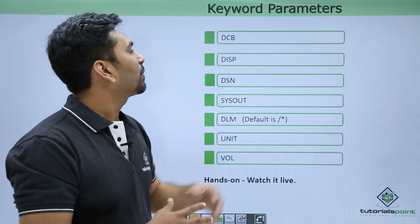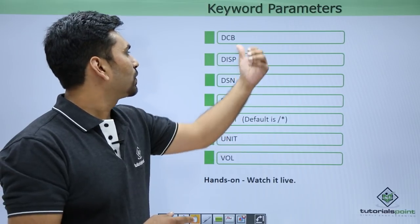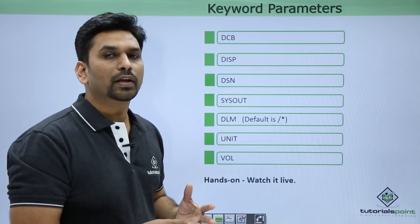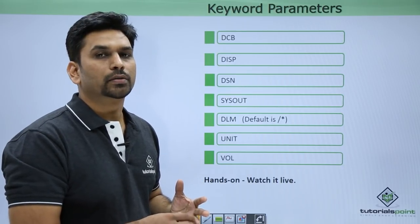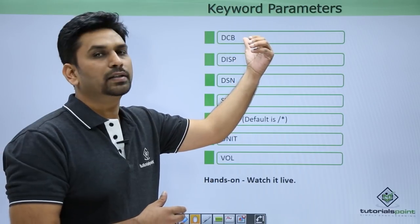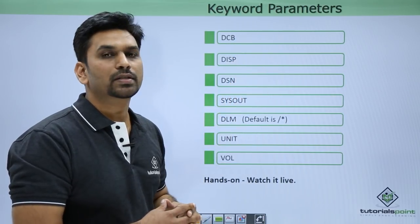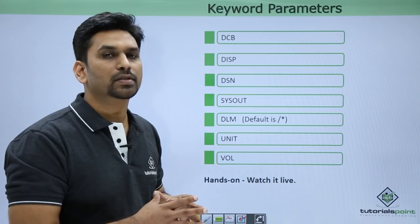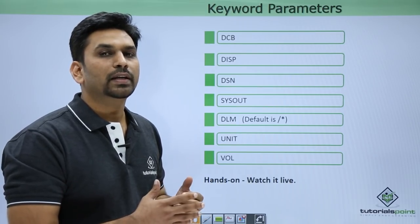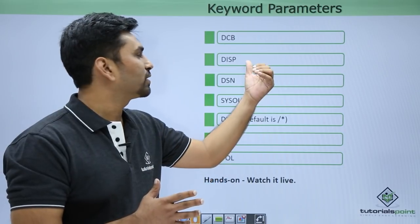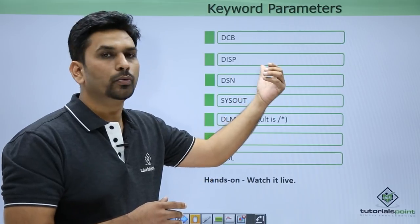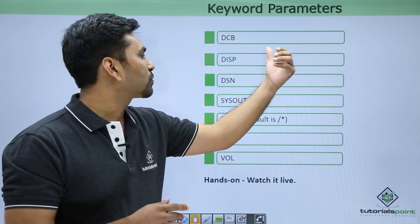Then we have keyword parameters: DCB, DISP, and DSN. In DCB, we mention the record length, record size, and record format — all these things are specified in the DCB parameters. Then we have DISP, which is disposition — the mode in which you want to open the file. If it is an input file, then it is share mode. If you want to create a new file, the disposition will be new. We will cover this in the hands-on part.